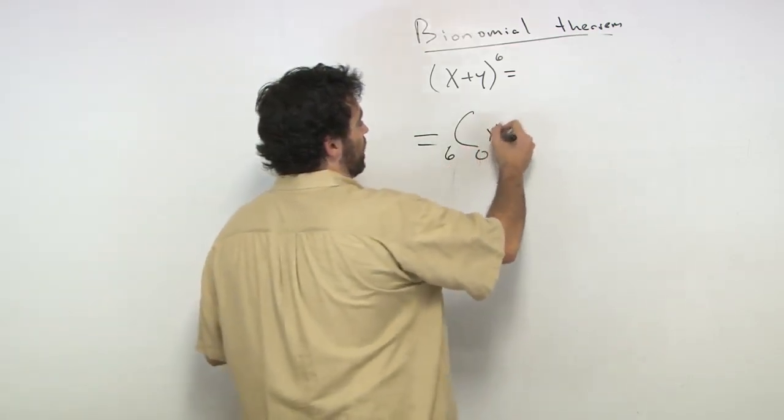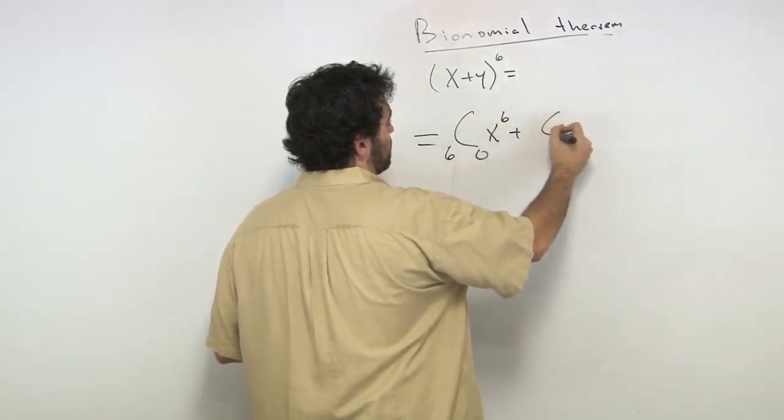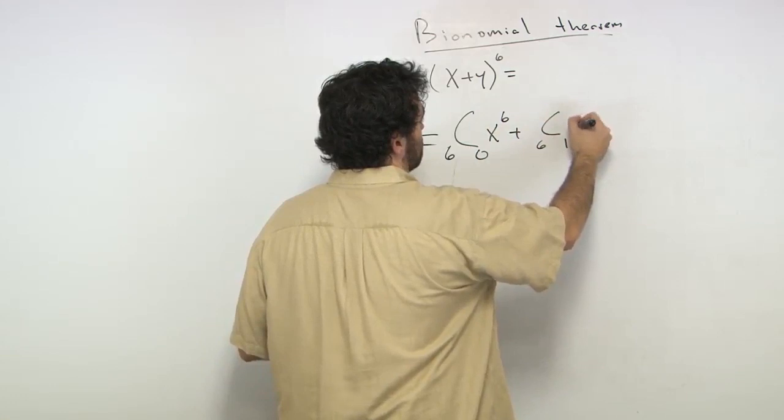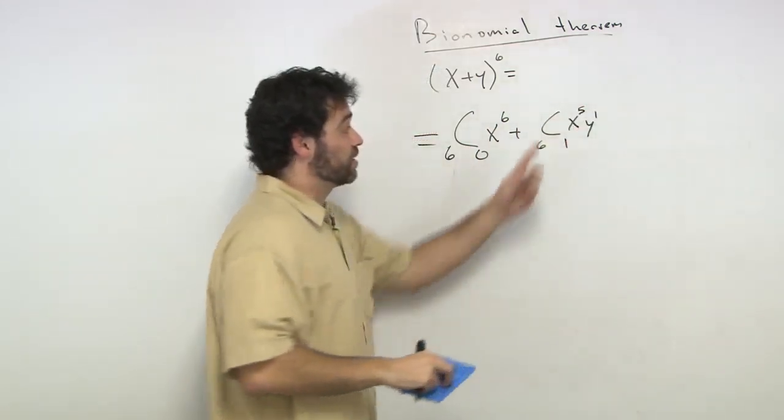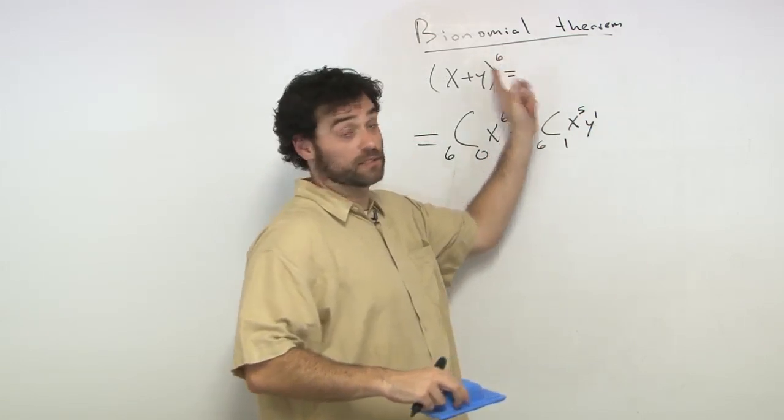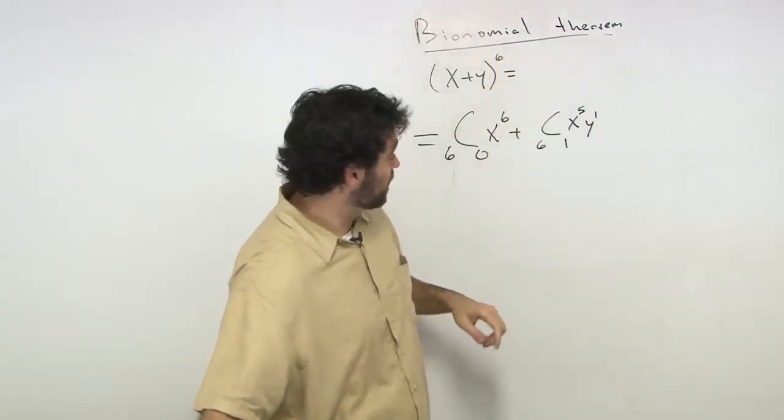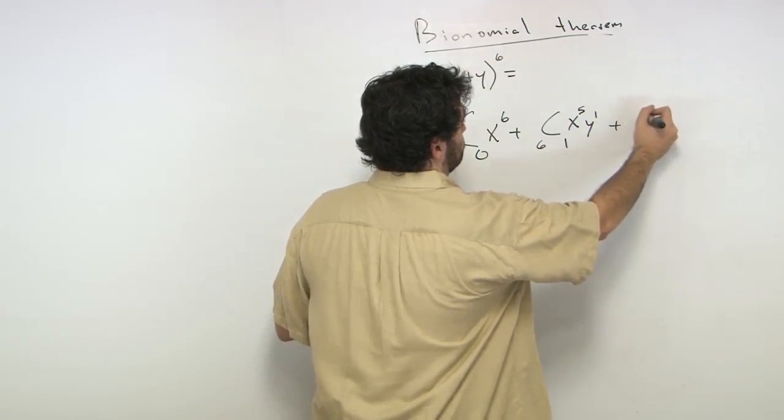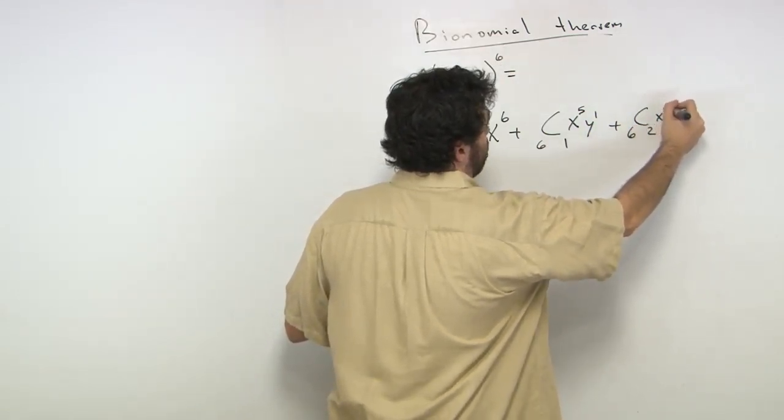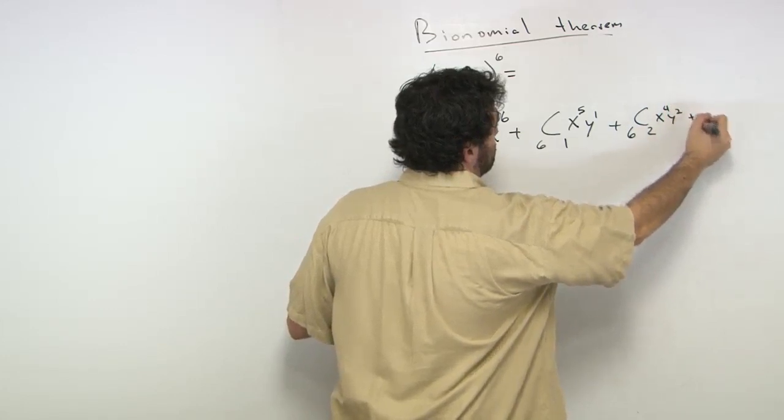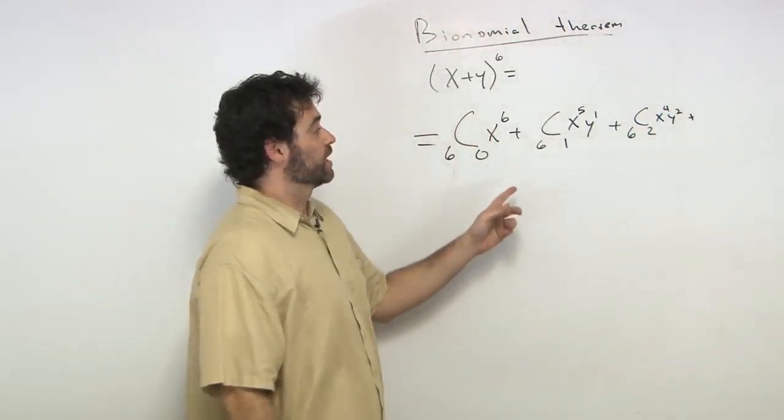So this becomes x to the 6 plus 6c1, x5, y1. Remember, these always have to add up to 6. Those exponents always have to add up to 6. Then we say that 6c2, x4, y2, plus, and I'm going to write this on the next line.